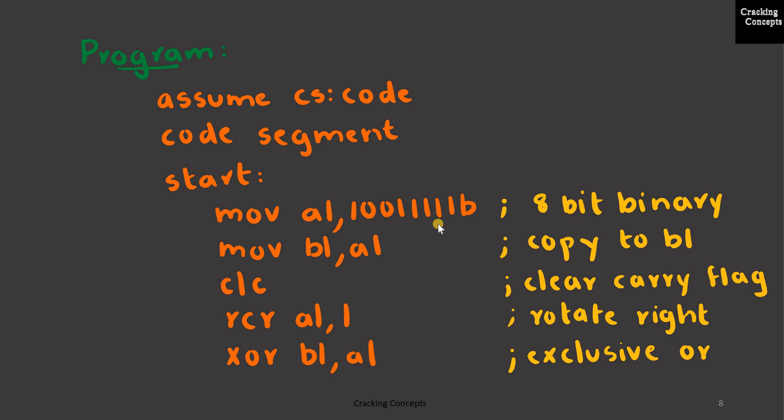First, we will store the 8-bit number into the AL register. I have added a suffix B here. Now this program is written based on the format that is used in the 8086 emulator. Next, I will keep a copy of the value of AL in another register BL. As we have already seen, for both rotate and shift we use the carry flag. So it is better if we clear out the previous values of the carry flag, which is done using the instruction CLC.